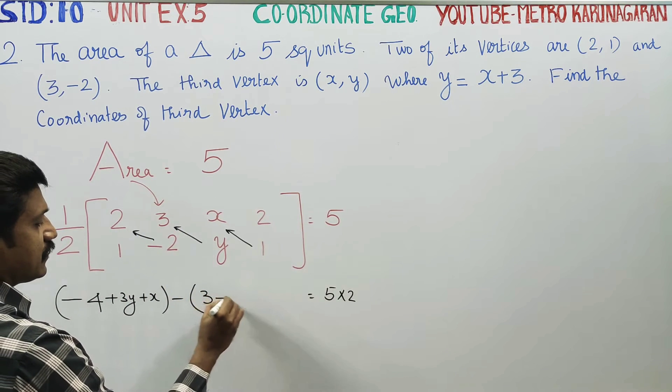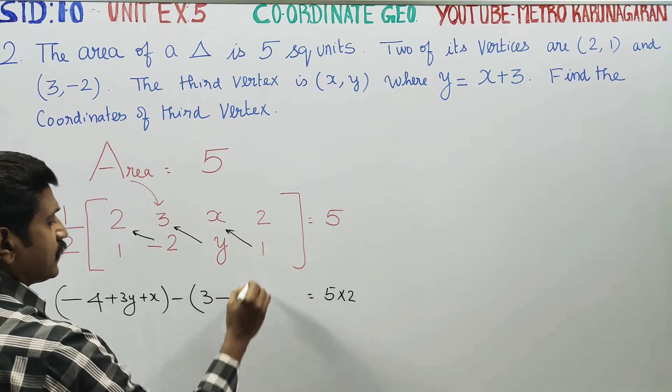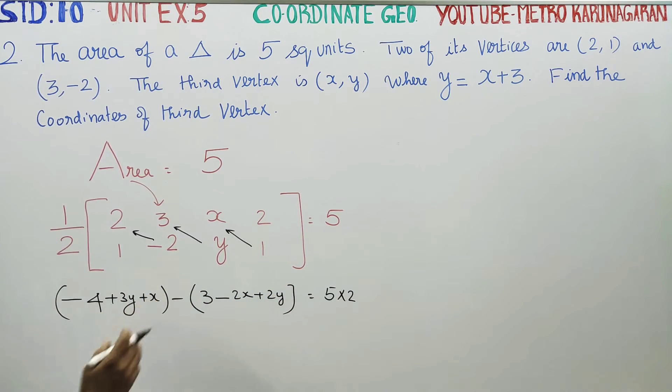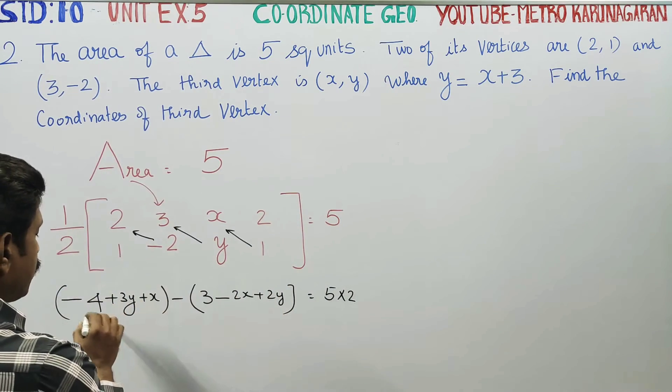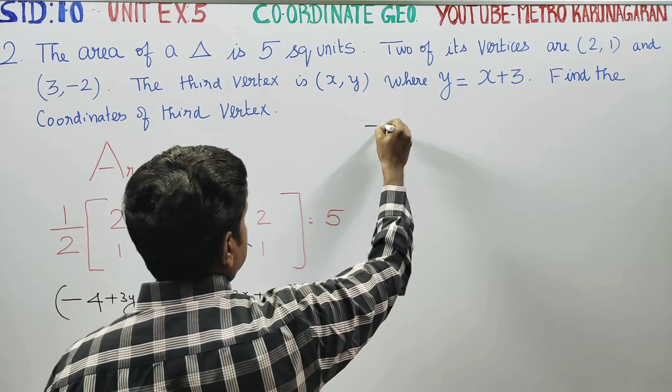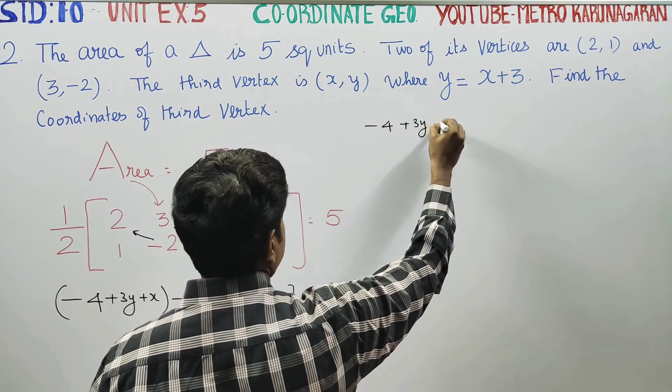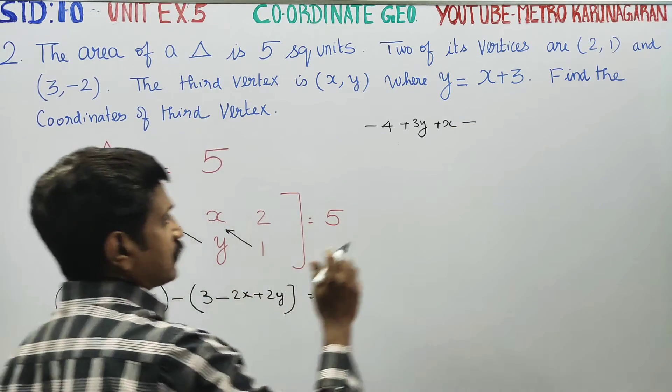Right-hand side minus left-hand side: 1, 3 is 3, -2 into x is -2x. Left side, plus 2y. Right minus left.